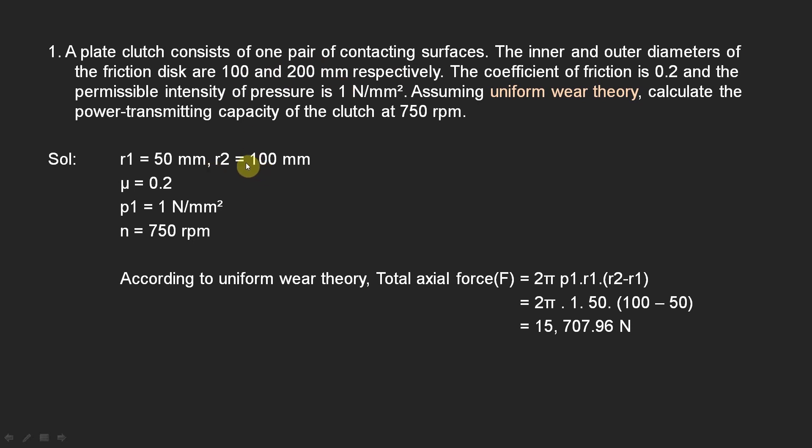Coefficient of friction μ is equal to 0.2. Permissible intensity of pressure means the maximum allowable pressure is 1 Newton per millimeter square, so p1 is 1 N/mm².